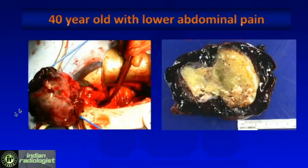We see the dermoid here, which is discolored — it's purple because it's necrotic — but you're also looking in between the uterus and the mass at the twisted pedicle.